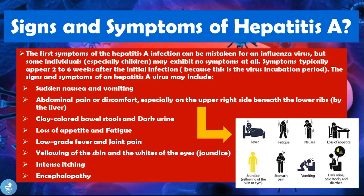The first symptoms of Hepatitis A infection can be mistaken for the influenza virus, but some individuals — especially children — may exhibit no symptoms at all. Symptoms typically appear two to six weeks after the initial infection due to the virus's incubation period. Signs and symptoms may include sudden nausea and vomiting, abdominal pain especially in the upper right side beneath the lower ribs, clay-colored bowel stools and dark urine, loss of appetite and fatigue, low-grade fever and joint pain, yellowing of the skin and whites of the eyes (jaundice), intense itching, or encephalopathy.